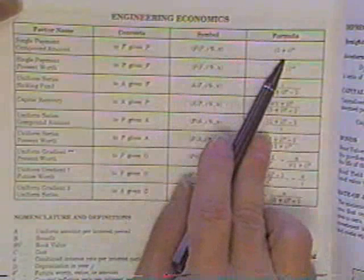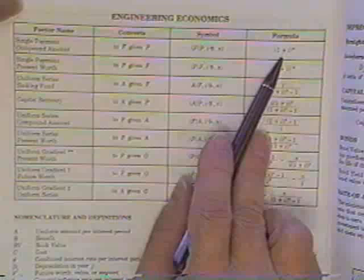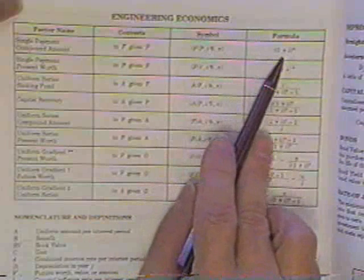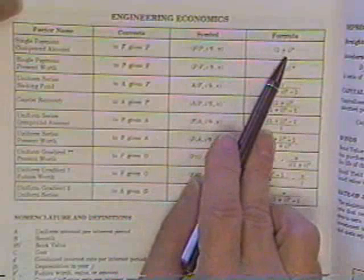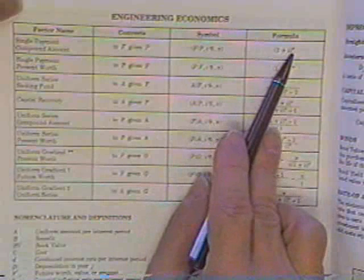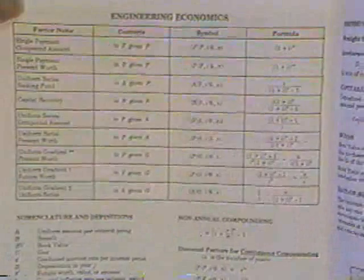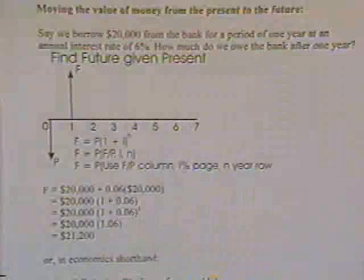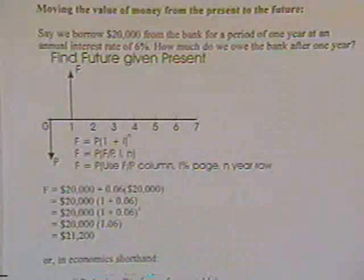You can multiply what you're given times this special symbol, F over P, comma I, comma N, which is found in the tables. Or you can use the basic formula itself. In this case, it says take one, add the interest rate to it, raise it to the N power, and that would also give you the factor to be multiplied by what you're given to turn it into what you want.